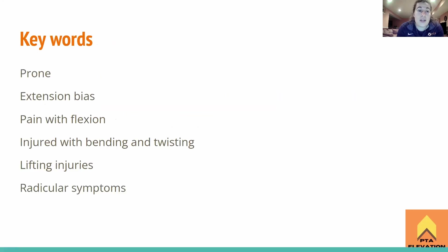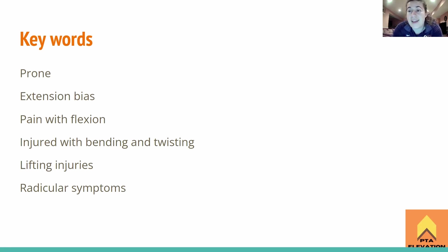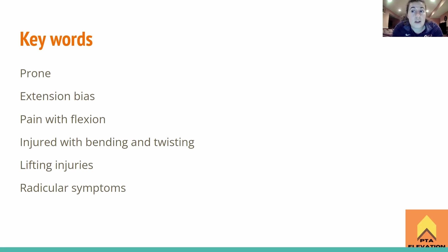Key words for disc herniation: prone and extension bias are big indicators. Pain with flexion is a good indication of herniation because that's the mechanism of injury — putting them in the same position where they got hurt. Injured with bending and twisting leads to the posterior lateral disc herniation. Unilateral symptoms result from this mechanism. A lifting injury can be either disc herniation or muscle strain — use other context clues to distinguish. With muscle strains, you won't have neurological symptoms. If there are neurological or radicular symptoms, that is indicative of a disc herniation.